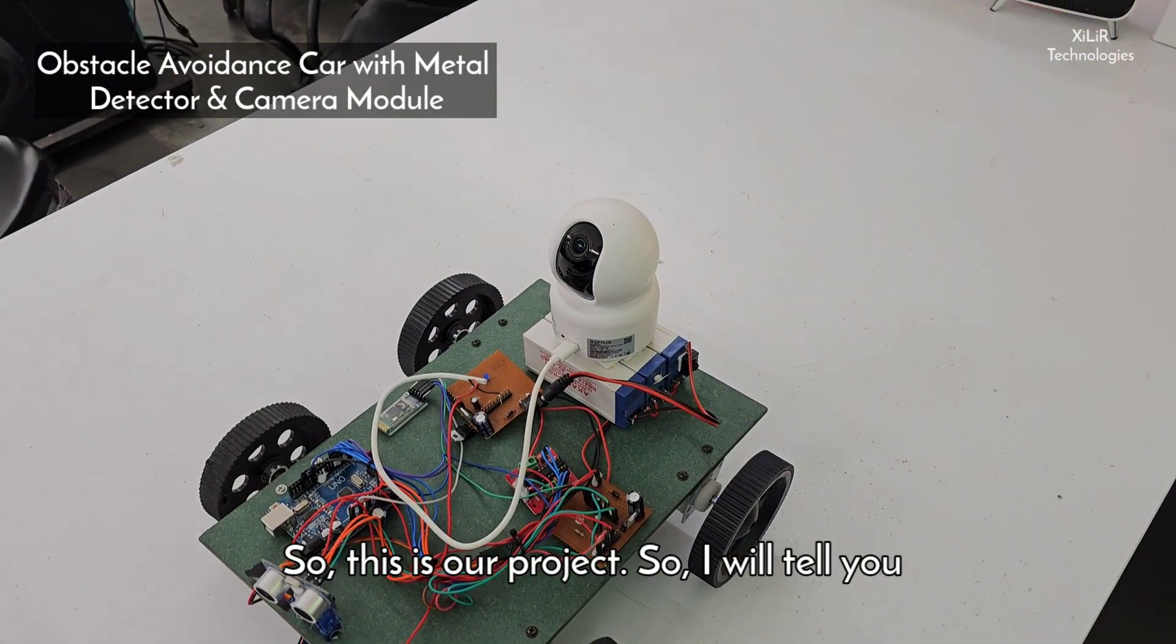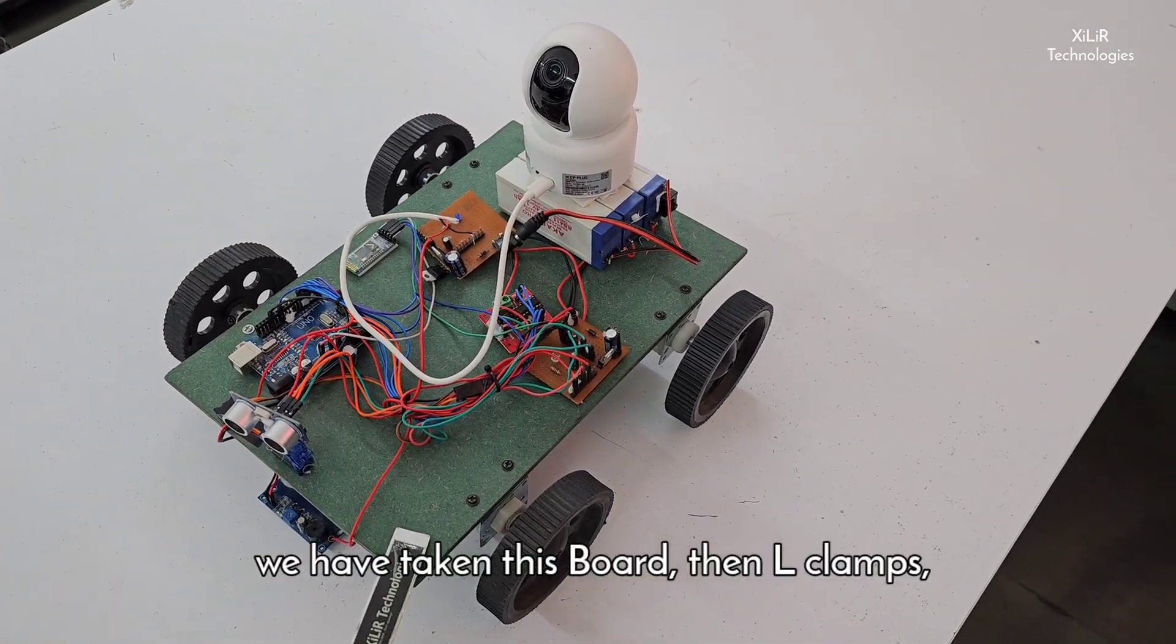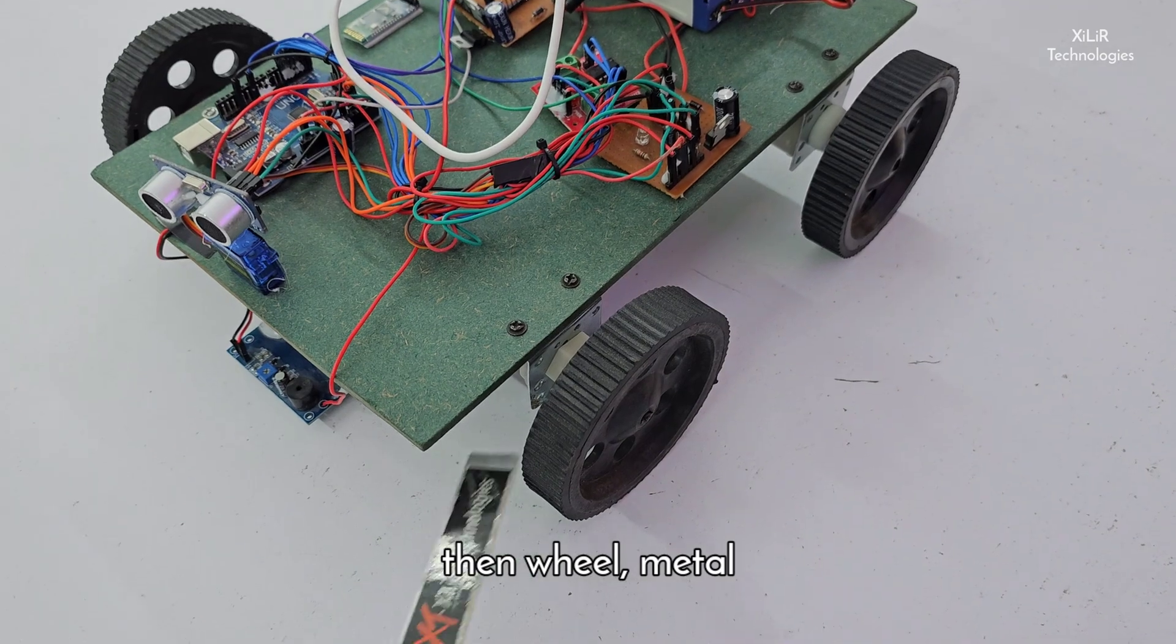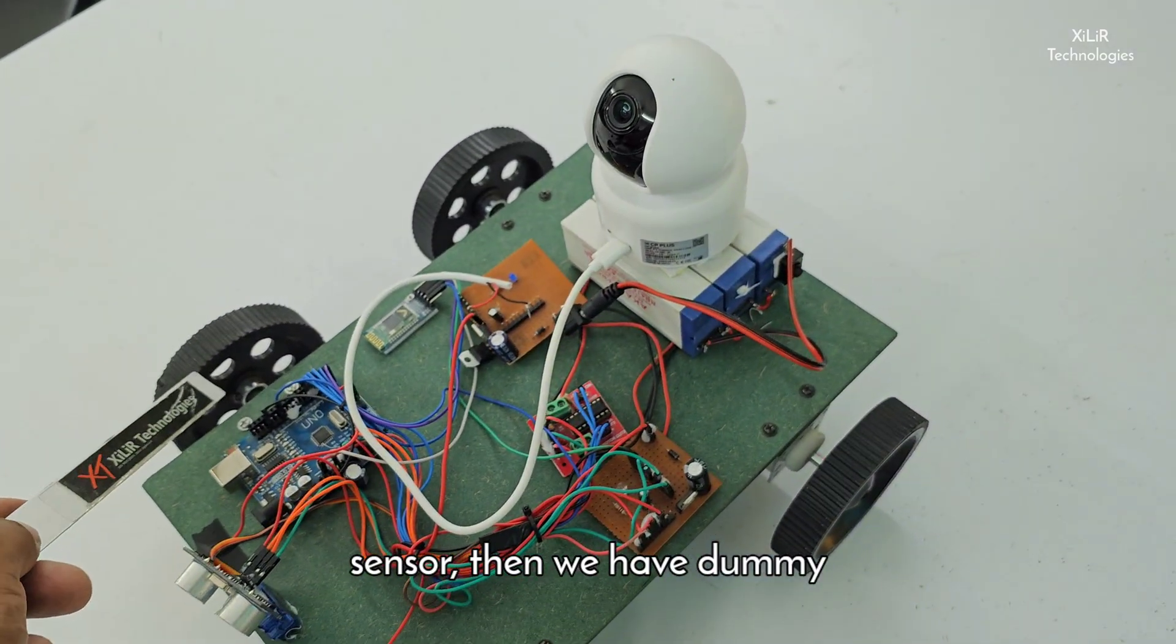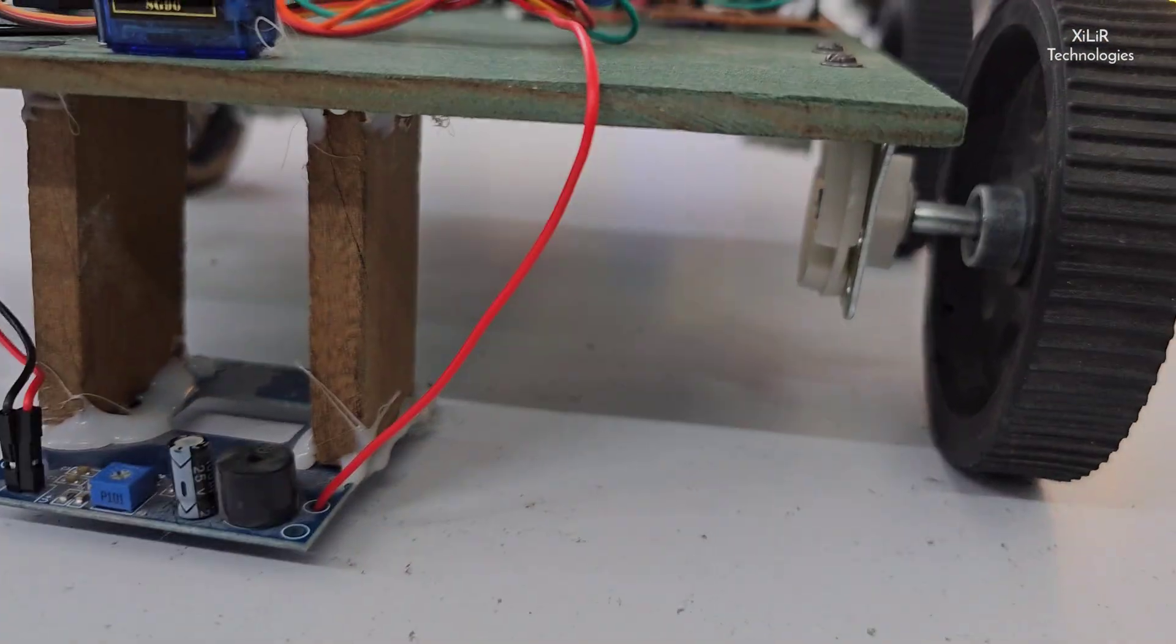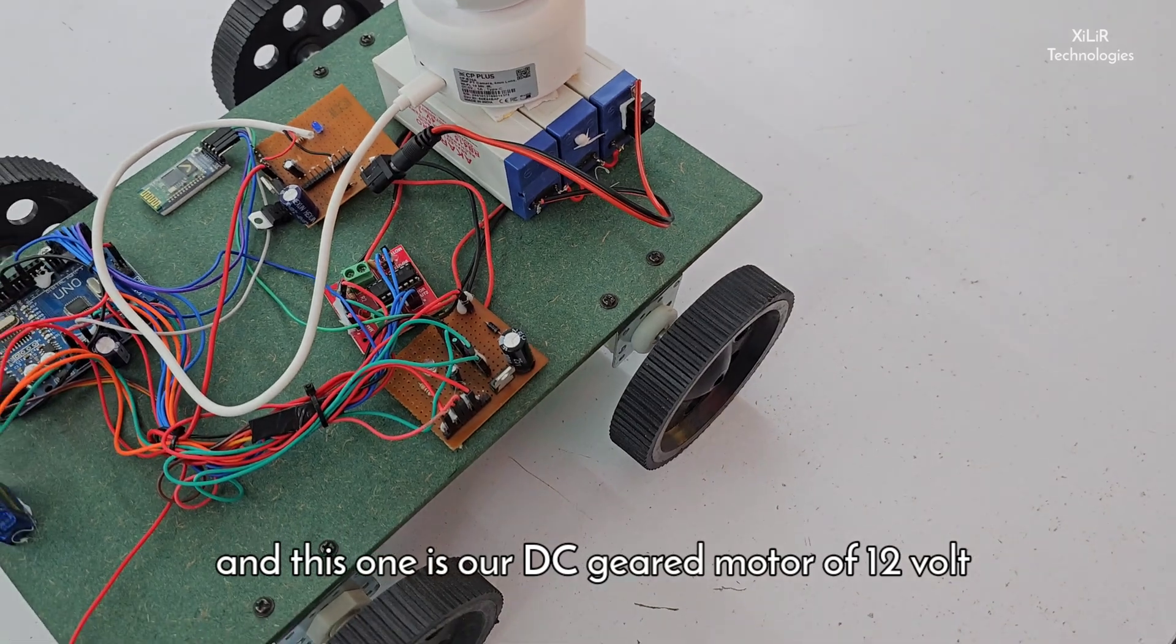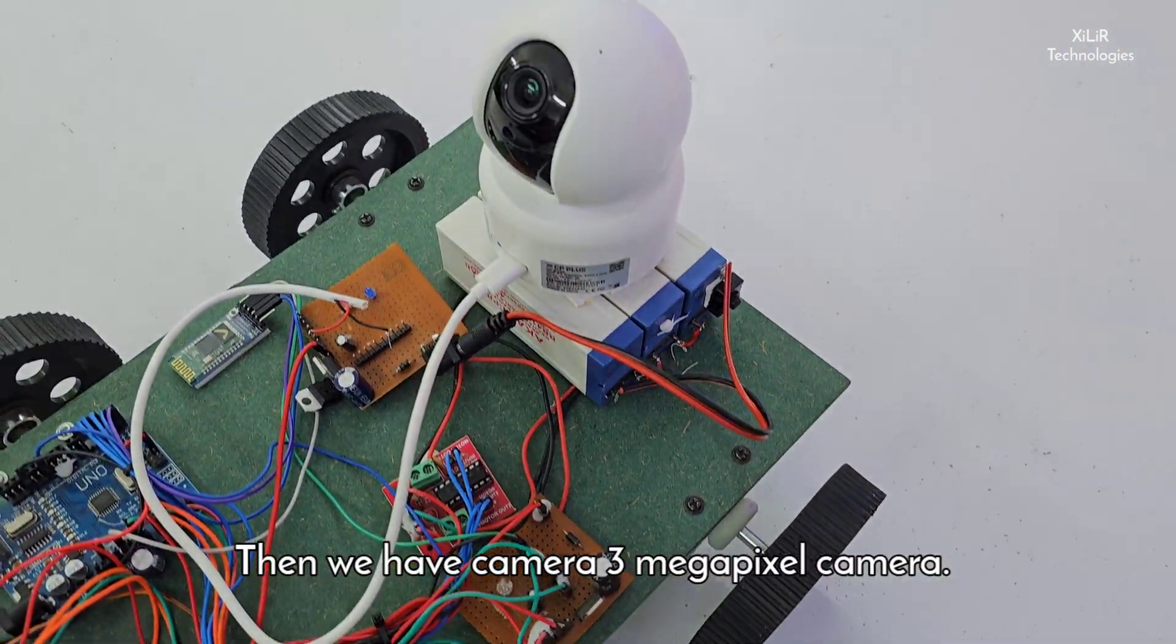So this is our project. I will tell you how we have constructed it. First of all, we have taken this HMDR board, then L clamps, then wheel metal sensor. Then we have dummy wheels here - dummy wheels mean without motor - and this one is our DC geared motor of 12 volt. Then we have camera, three megapixel camera. Any camera we can use here.